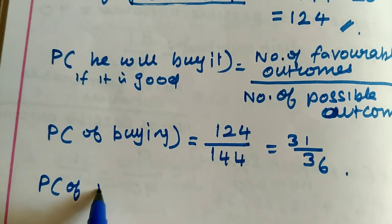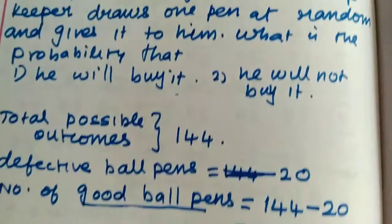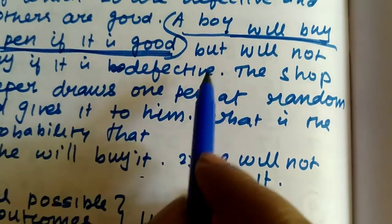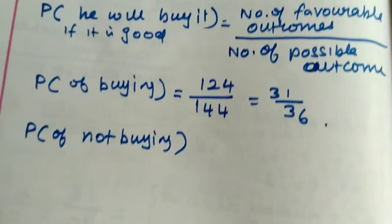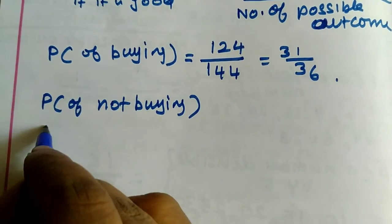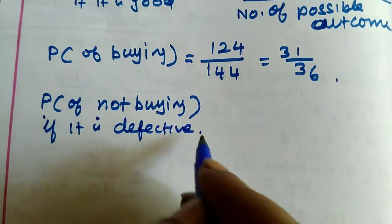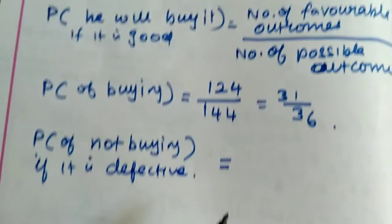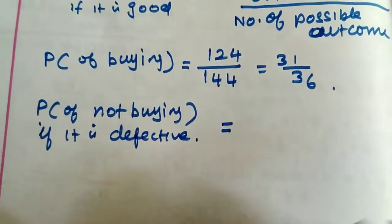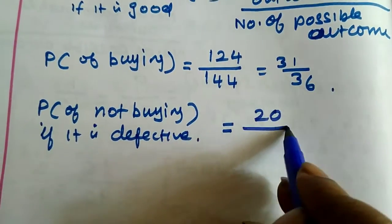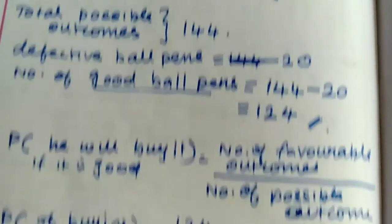The probability of not buying — he will not buy if it is defective. Not buying if it is defective: number of defective ball pens is 20, divided by total number of ball pens, which is 144. So probability of not buying is 20 divided by 144.